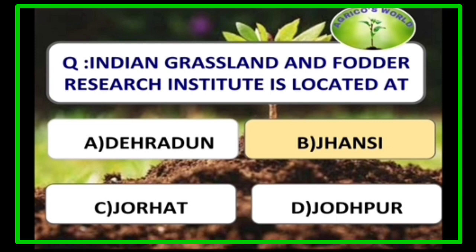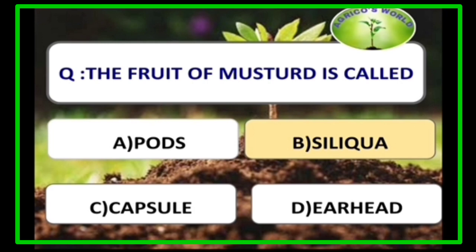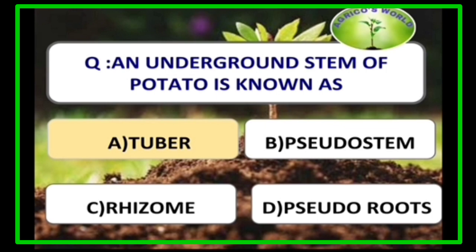The Indian Grassland and Fodder Research Institute is located at Jhansi. The queen of cereals is maize, whereas the king of cereals is wheat. The fruit of mustard is called a siliqua, the fruit of legumes is a pod, and the fruit of Malvaceae family members is called a capsule. An underground stem of potato is known as a tuber; it is actually a modified stem.